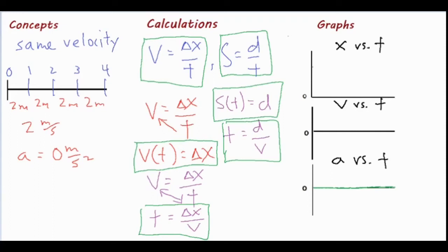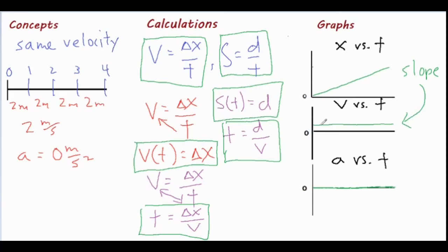For a position versus time graph, if something is moving forward it's going to be a straight positive slope. If it has a constant velocity and the same rate of change, then it's going to be a completely flat line on the velocity versus time graph. The slope of the position versus time graph gives you that exact velocity — so if I solve for the slope and get exactly two meters per second, I put that line right at two on the velocity graph.